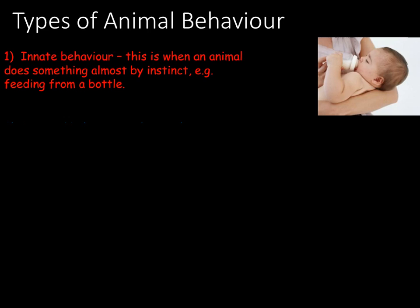Some forms of innate behaviour are slightly more complicated. For example, earthworms will naturally move away from light — this is known as negative phototaxis. Also, sea anemones can pick up the chemicals emitted by their prey, which will cause their tentacles to move towards the prey. This is an innate behaviour; they have not had to learn this.